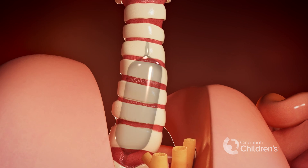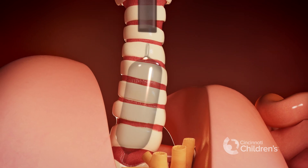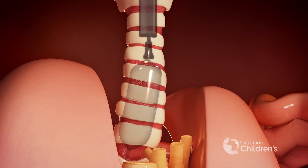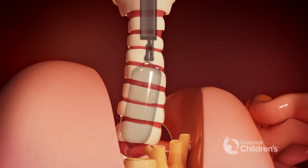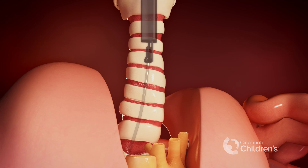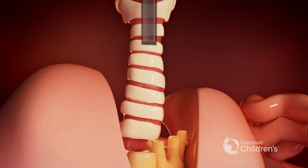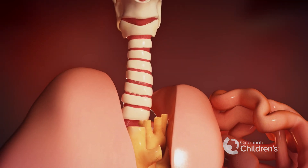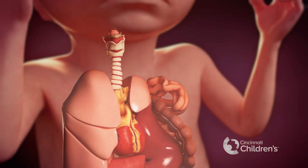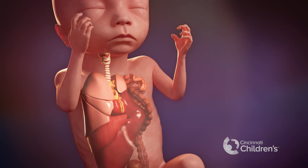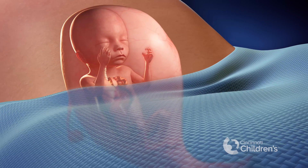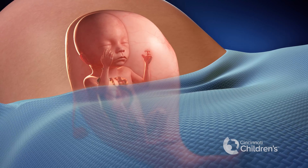If needle puncturing is not possible, we use a grasper to hold on to the balloon while a needle punctures the balloon. The deflated balloon is then removed from the baby's airway using the grasper. The mother and fetus are then monitored carefully for the remainder of the pregnancy. Ideally, the baby is delivered vaginally at term, with a C-section reserved for the usual obstetrical reasons.